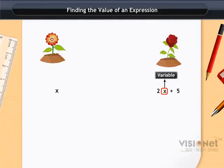Let us take some values of x. Let us say that there are 10 marigolds in the garden. So x is equal to 10. Now to get the number of roses we put this value in the expression 2x plus 5.